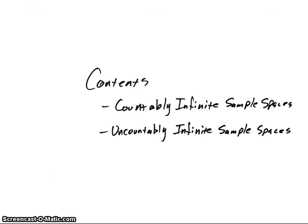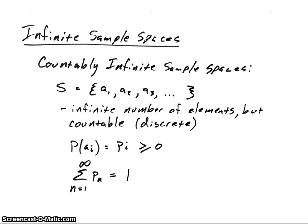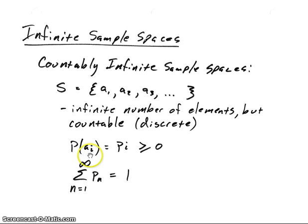In this video we're going to look at countably infinite sample spaces and uncountably infinite sample spaces, and how to calculate probabilities for those two types of spaces. For countably infinite sample spaces, we have elements that we can count — discrete elements in the sample space and there's an infinite number of them. So for each item in the sample space, A1, A2, A3, and so on, they each have a probability of occurring that is greater than zero, and if we sum up all of those probabilities we should get one.